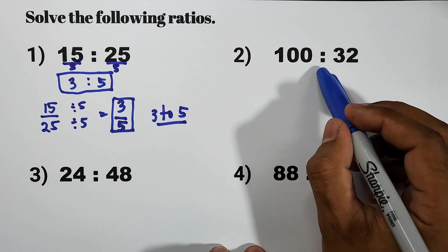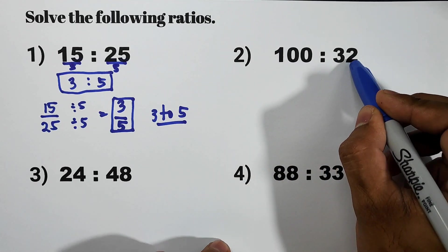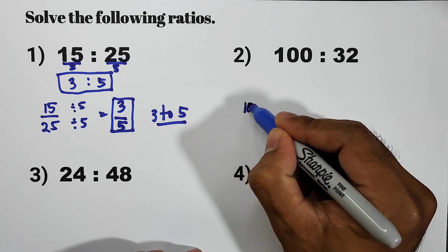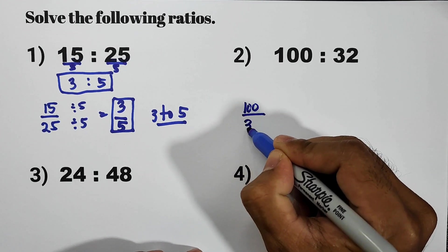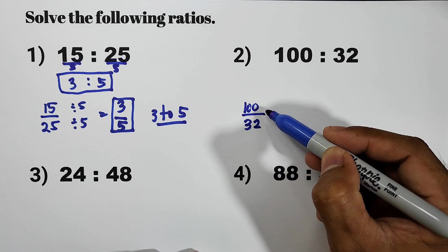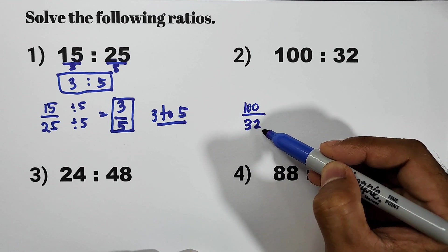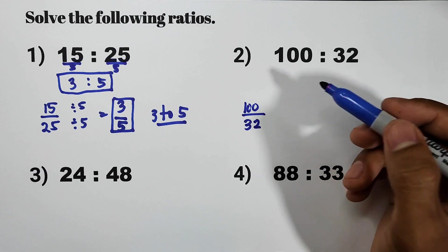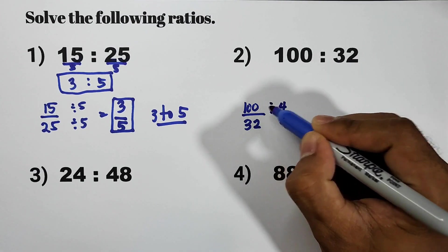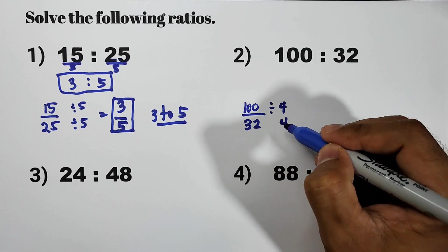That is 100 to 32. So let us simplify. Write it in terms of fraction. That is 100 over 32. Find the GCF or greatest common factor of 100 and 32. That is 4.